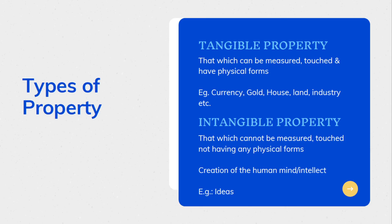So what are the types of properties? First, there is tangible property and second, intangible property. Tangible properties are the properties which can be measured, touched, and have physical forms — for example, currency, gold, house, land, and industry. Intangible properties are those which cannot be measured, touched, and do not have any physical form — for example, creations of the human mind or intellect, like our ideas, which can be considered as intangible or intellectual property.